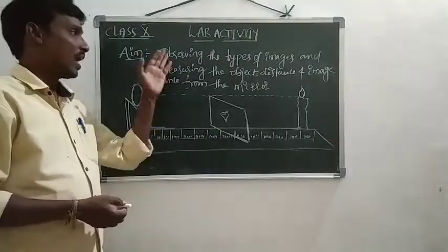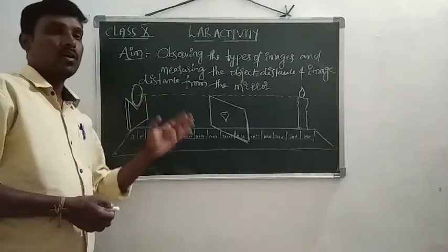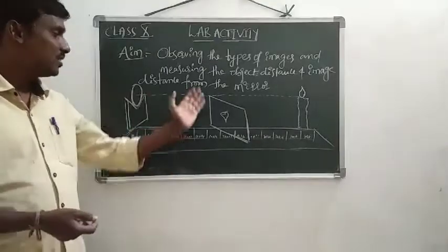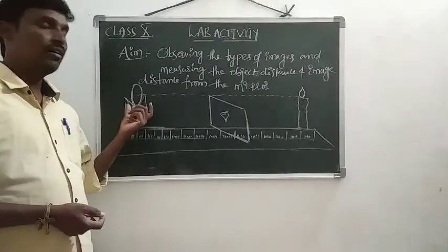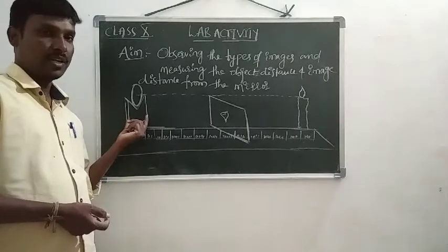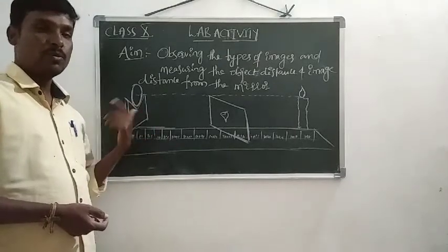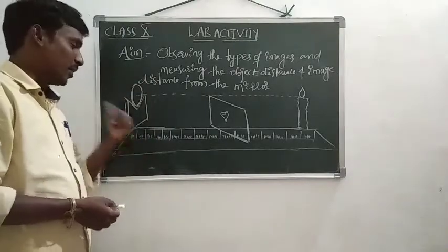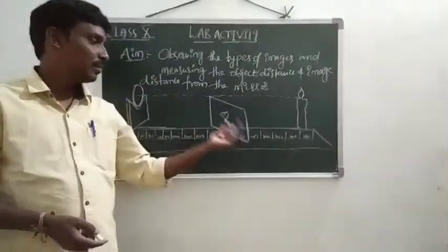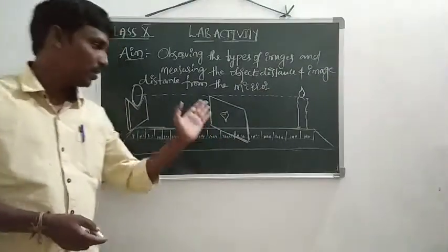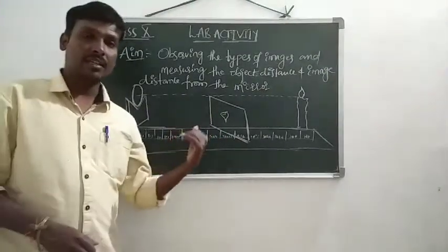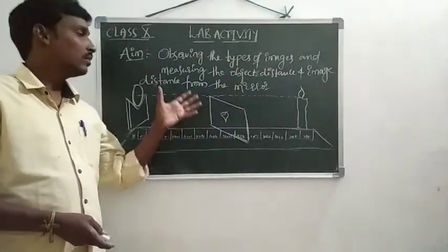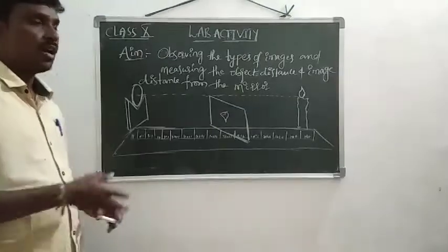For the procedure, first arrange the concave mirror with the help of a V-stand — the V-stand is one more required material. Adjust the concave mirror, candle, paper, and meter scale as shown in the figure.